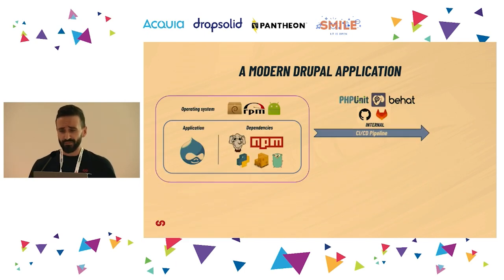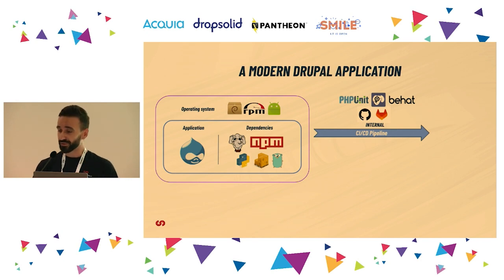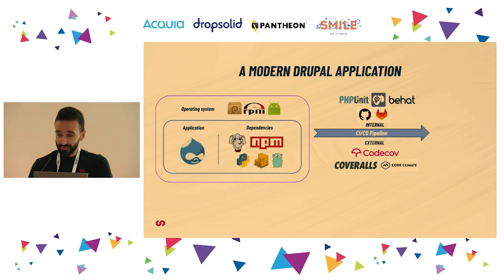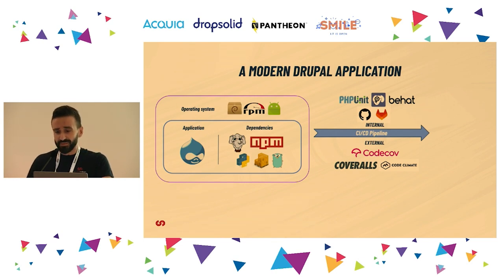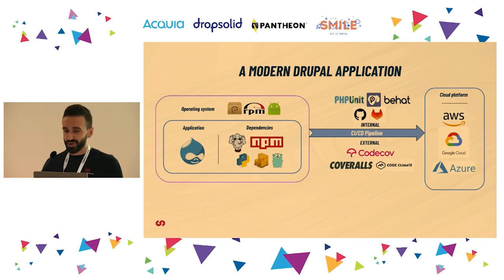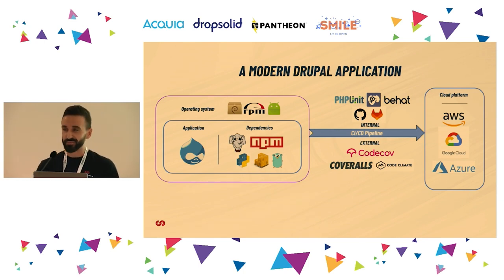Then we usually have CI/CD systems with many jobs: code linting, QA, running tests, collecting metrics, and so on. Another very common case is integrating external services like Coveralls or Code Climate, which means giving full external access to our codebase. Then we ship our application to the cloud — AWS, GCP, Azure, whatever we like.